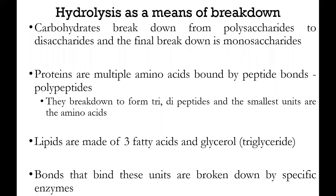Proteins are multiple amino acids bound by peptide bonds, referred to as polypeptides. A protein is a chain of amino acids, referred to as a polypeptide chain. These polypeptide chains need to be broken down by enzymes into amino acids. Those amino acids are the monomers that will be absorbed by the mucosa of the GIT. They are broken down to form tripeptides and dipeptides, and those are broken down by brush border enzymes into amino acids, which will then be absorbed.